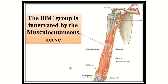In this picture we can see the musculocutaneous nerve arising from the lateral cord. It supplies three important muscles, and the mnemonic to remember them is BBC: B for biceps, B for brachialis, and C for coracobrachialis. This BBC group is supplied by the musculocutaneous nerve.